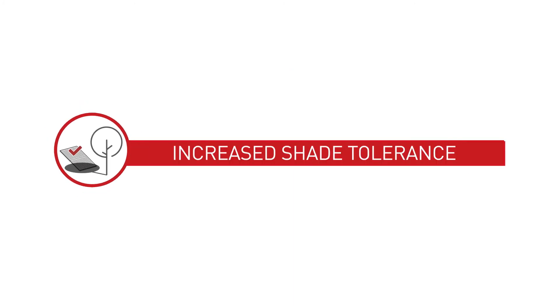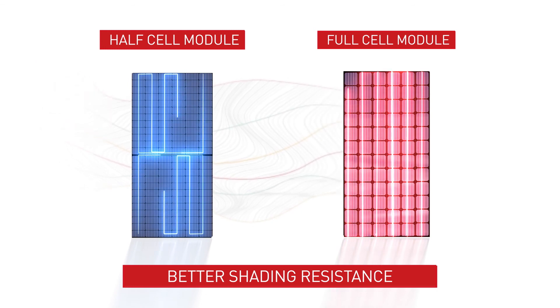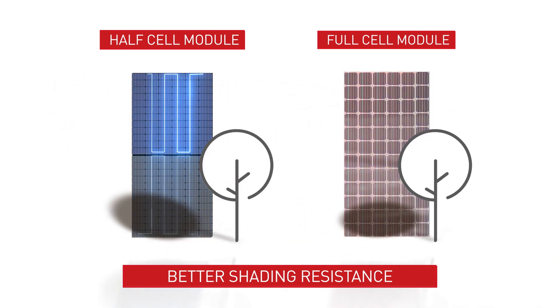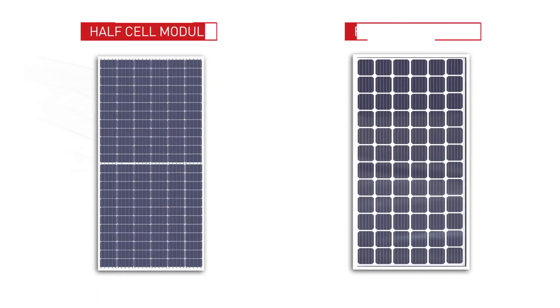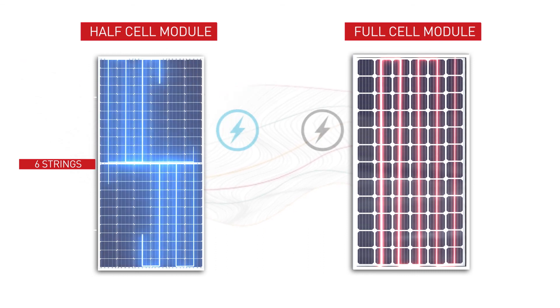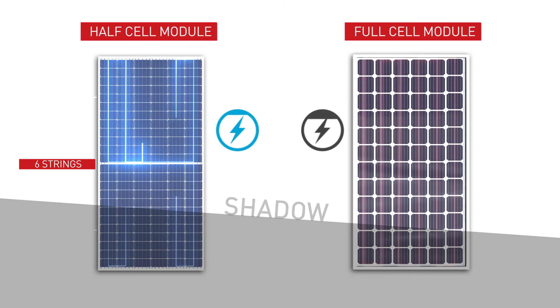Increased shade tolerance. Bypass diodes and innovative series parallel connections enable the half-cell module to perform better in partial shadow conditions. With six module cell strings, a half-cell module has twice as many cell strings as a standard solar module. With more strings, the effective partial shade is less severe.